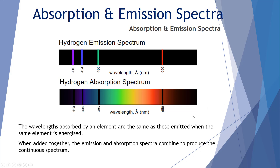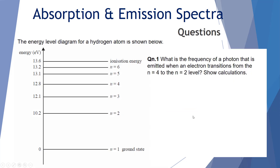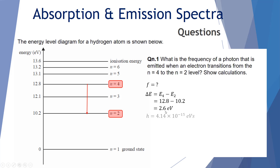Question 1: What's the frequency of a photon emitted when an electron transitions from n equals 4 to n equals 2? The change in energy is 12.8 minus 10.2 electron volts, which is 2.6 electron volts. Using f equals E over h, with Planck's constant 4.14 × 10⁻¹⁵ electron volt seconds, we get a frequency of 6.28 × 10¹⁴ hertz.